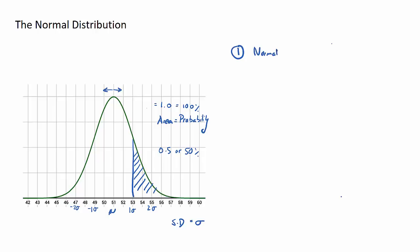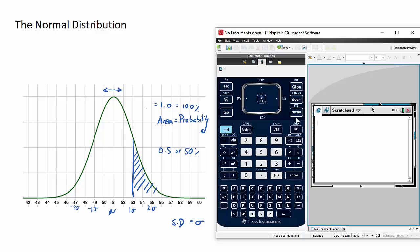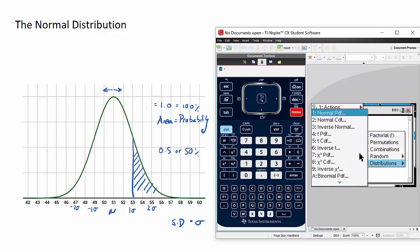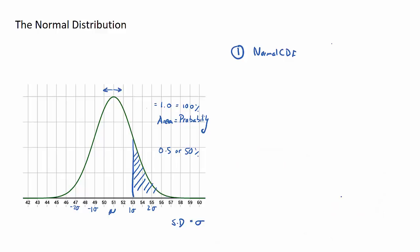Now I won't go through the ins and outs of every one, I recommend doing some of the questions, but the two different functions to find them is menu, probability, distributions, and we'll use these number two and number three. And the first one that I'm talking about is normal CDF. And that's to find a particular area for a given value.